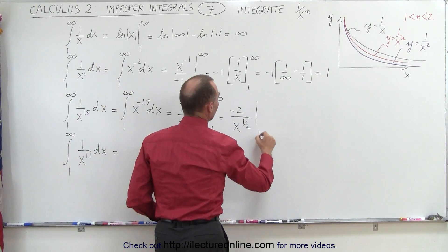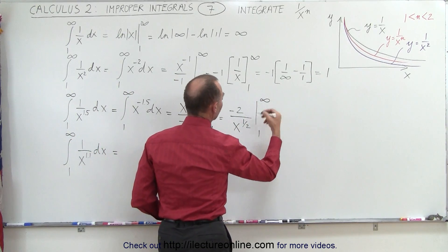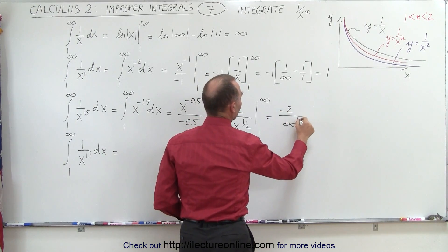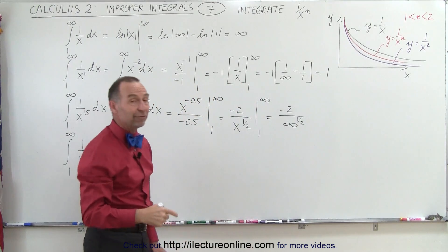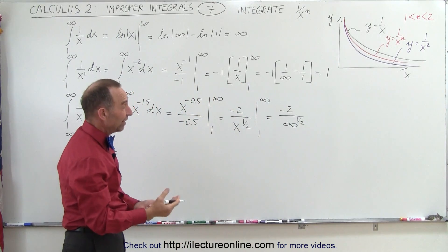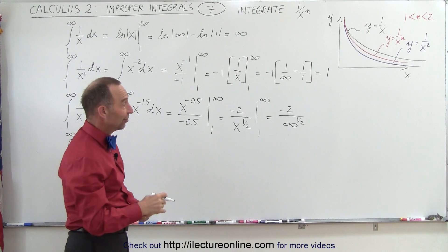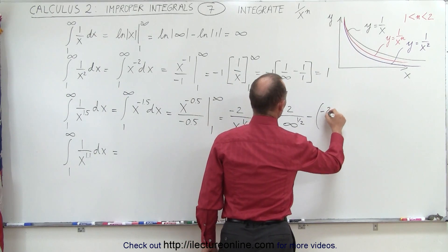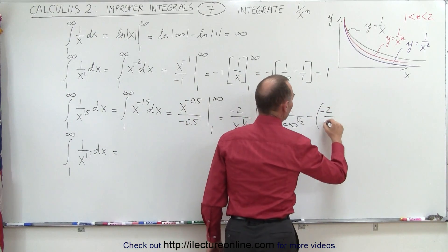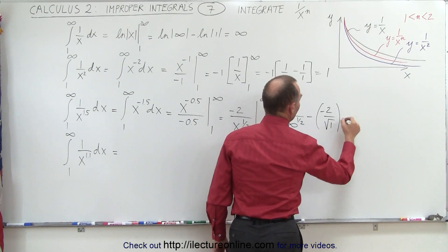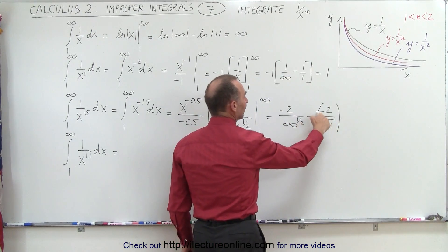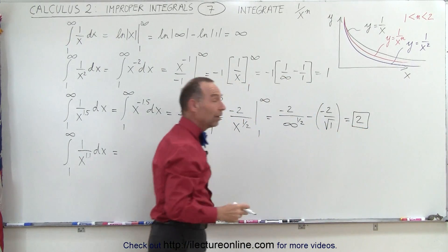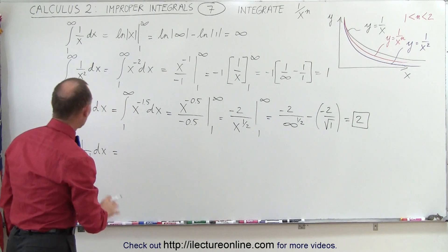We evaluate that from 1 to infinity. When we plug in the upper limit, we get minus 2 divided by infinity to the 1.5 power. Anything over infinity equals 0, so that term becomes 0. Minus minus 2 divided by the square root of 1 — and the square root of 1 is 1 — so the negative times negative becomes positive, and this is equal to 2. So when we evaluate that integral, we do indeed get 2.